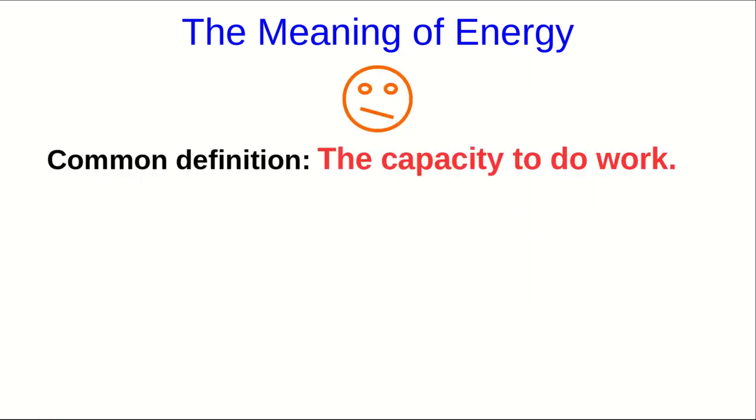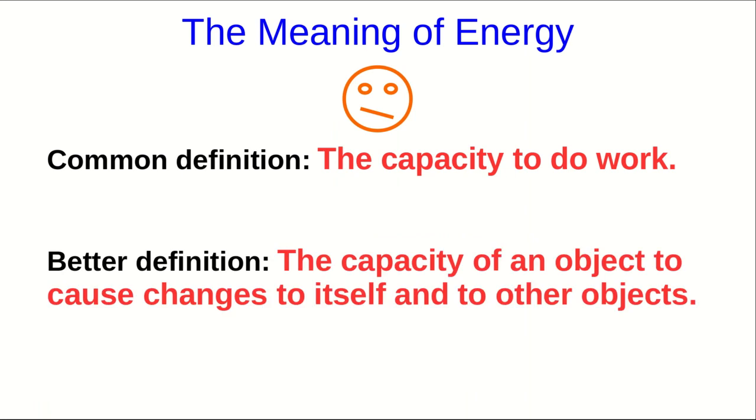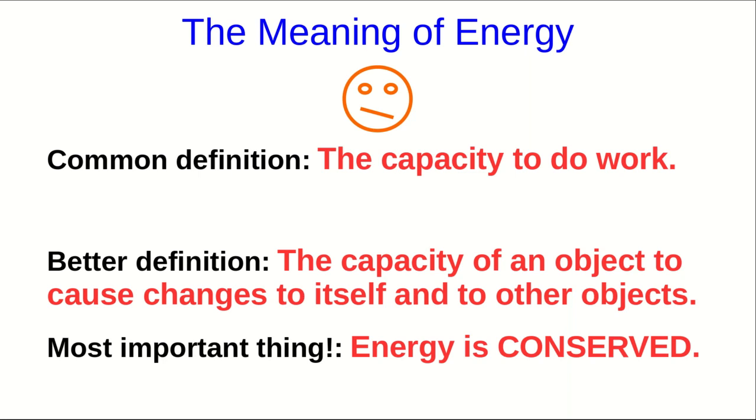This gives us what I feel is a better definition of energy. Energy is the capacity of an object to cause changes to itself and to other objects. Now, I still feel that something critical is missing here. Every time we talk about energy, we should always have at the forefront of our minds the most important thing, which is that the energy cannot be destroyed or created. It is conserved.